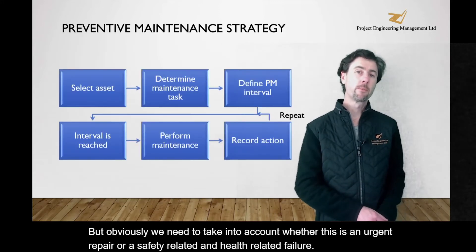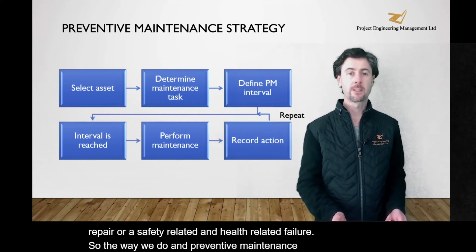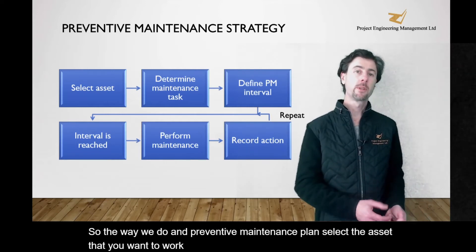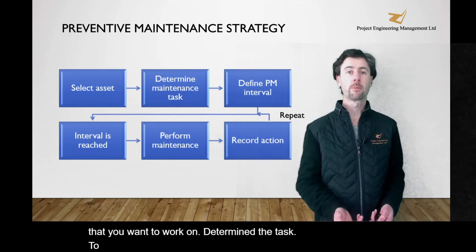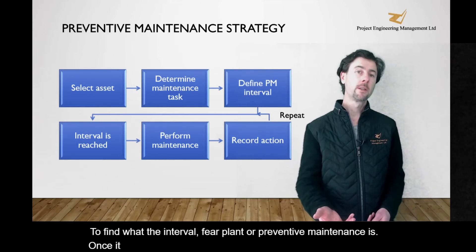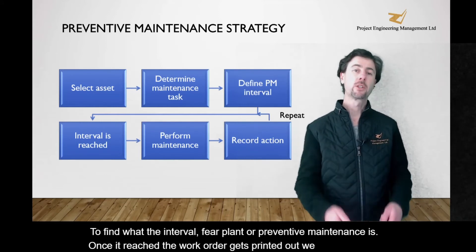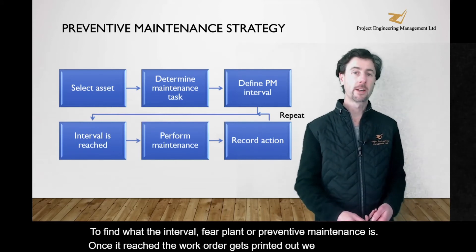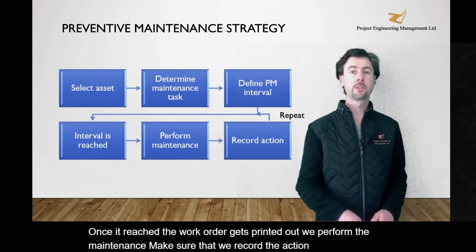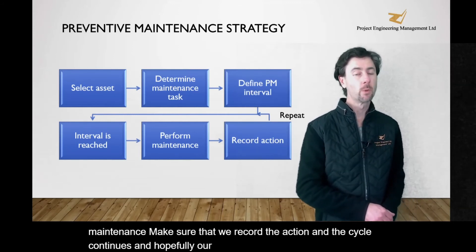So the way we do a preventive maintenance plan: select the asset that you want to work on, determine the task to find what the interval for your planned or preventive maintenance is. Once it's reached, the work order gets printed out, we perform the maintenance, make sure that we record the action, and the cycle continues — and hopefully our asset doesn't fail because of the good work we're doing.